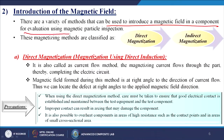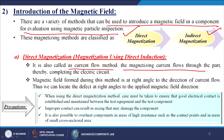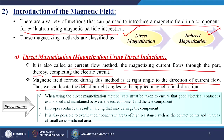Next, the second step: introduction of the magnetic field. There are a variety of methods to introduce a magnetic field in a component for evaluation using magnetic particle inspection. These magnetizing methods are classified as direct magnetization and indirect magnetization. Direct magnetization is sometimes called magnetization using direct induction — it is also called the current flow method. The magnetizing current flows through the part, completing the electric circuit. The magnetic field formed during this method is at right angles to the direction of current flow, so we can locate defects at right angles to the applied magnetic field direction.